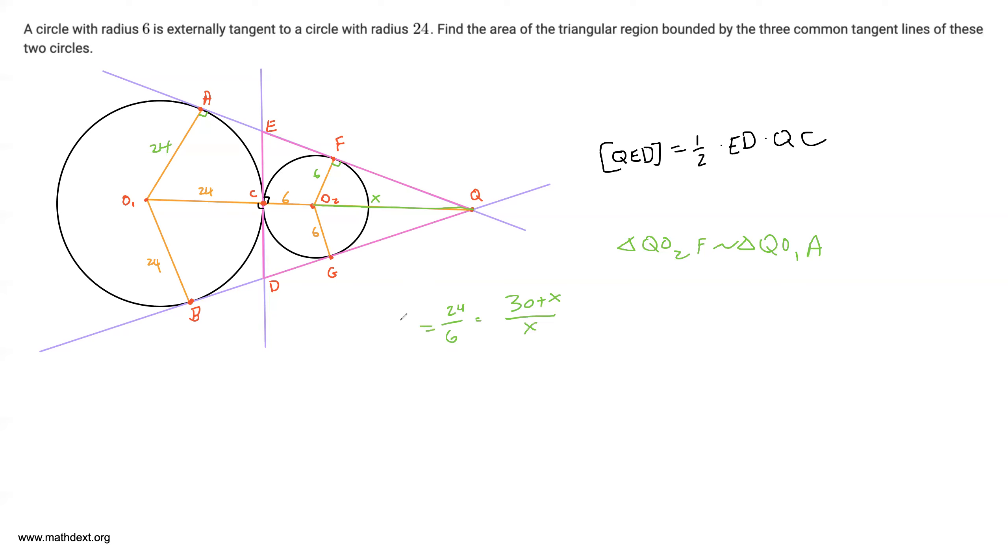So 24 over 6, which is equal to 4. 4 is equal to 30 plus x over x. Therefore, if you multiply both sides by x, you have 4x is equal to 30 plus x, 3x is equal to 30, and x is equal to 10.